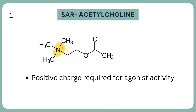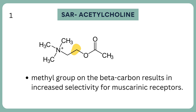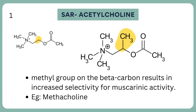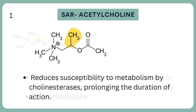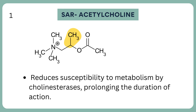Also, the positive charge is required for activity. Generally, the addition of a methyl group on the beta-carbon results in increased selectivity for muscarinic receptors — for example, methacholine. This also reduces susceptibility to metabolism by cholinesterases, prolonging the duration of action.